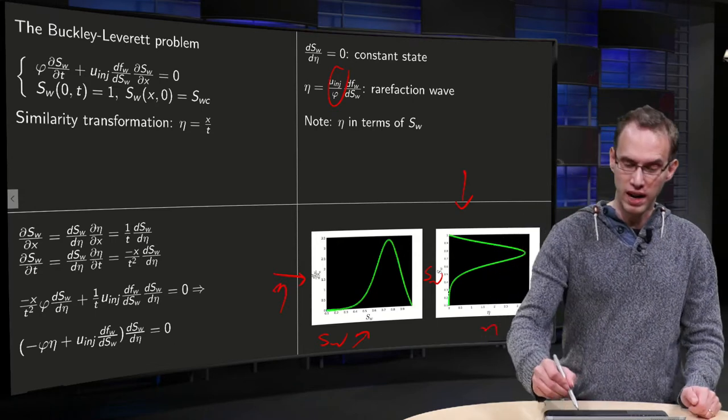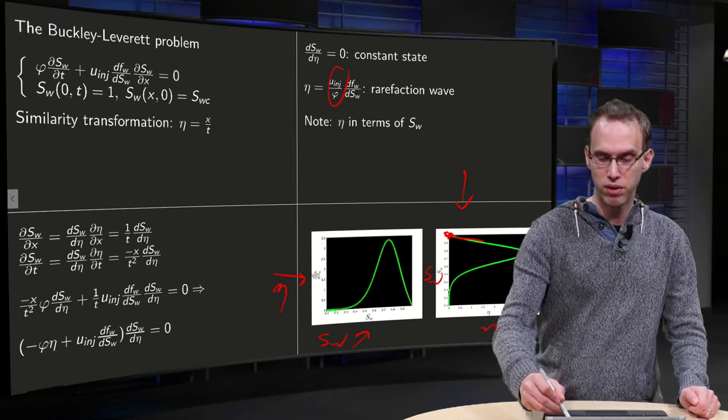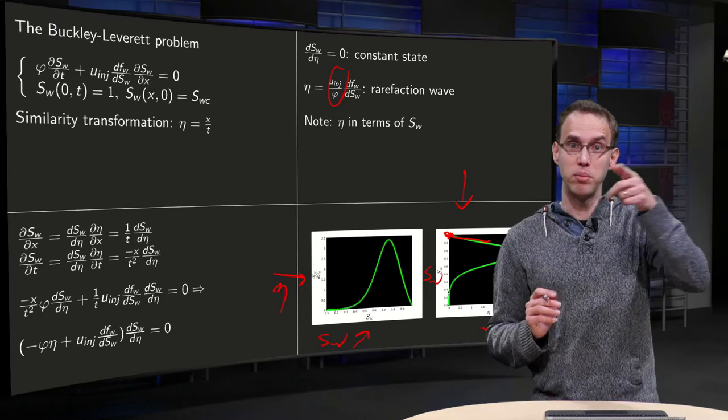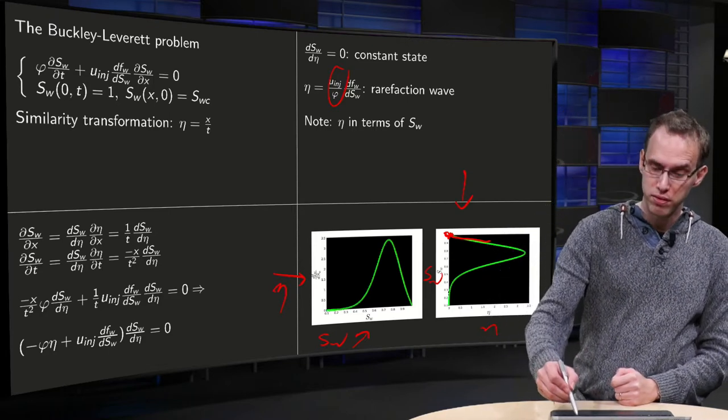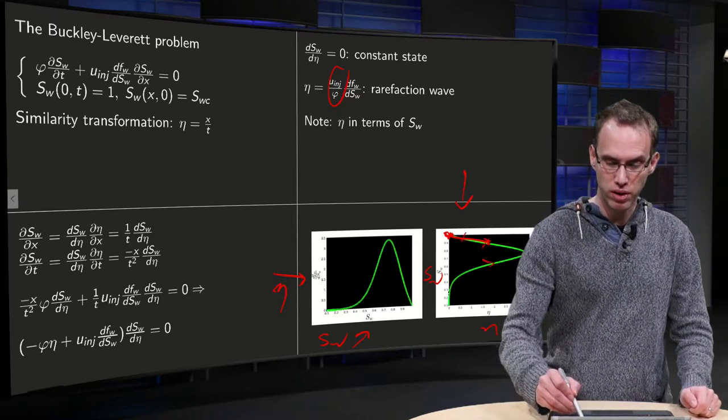But now a problem arises. We start over here with injection 1 and then say we can just follow the curve. So if η continues, Sw becomes smaller. But wait a minute, we have for every η, not one, but two values of Sw here as well.